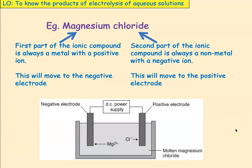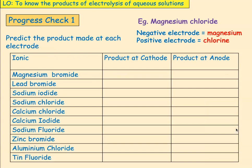The first part of an ionic compound is always a metal with a positive ion, and the second part is always a non-metal with a negative ion. The positive ion moves to the negative electrode, and the negative non-metal ion moves to the positive electrode. Pause the video and predict the product made at each electrode — what is made at the cathode, the negative electrode, and what is made at the anode, the positive electrode.